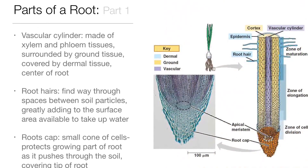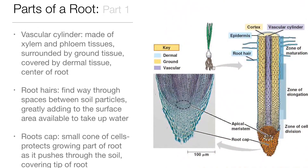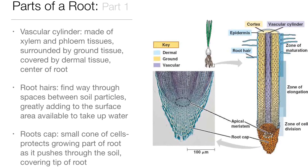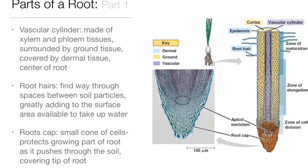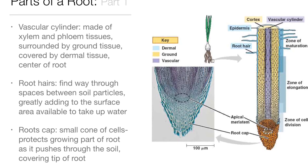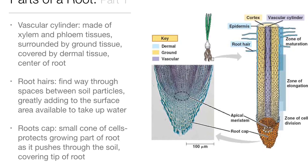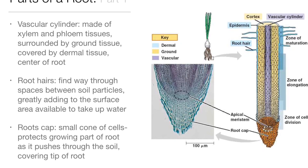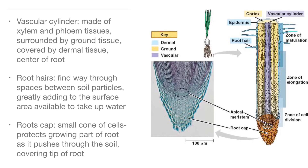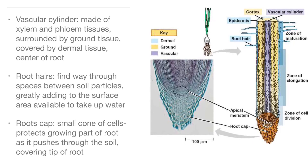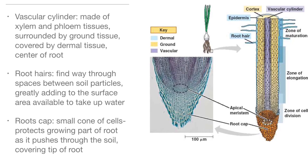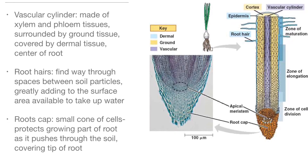Parts of a root: the vascular cylinder is made of xylem and phloem tissues, surrounded by ground tissue, and covered by dermal tissue at the center of the root. Root hairs find their way through spaces between soil particles, greatly adding to the surface area available to take up water. The root cap is a small cone of cells that protects the growing parts of the root as it pushes through the soil, covering the tip of the root.